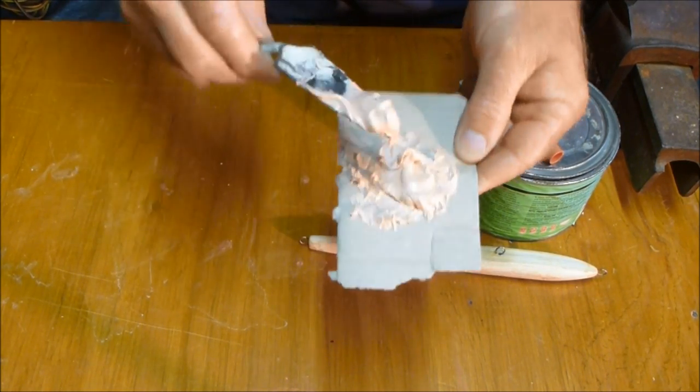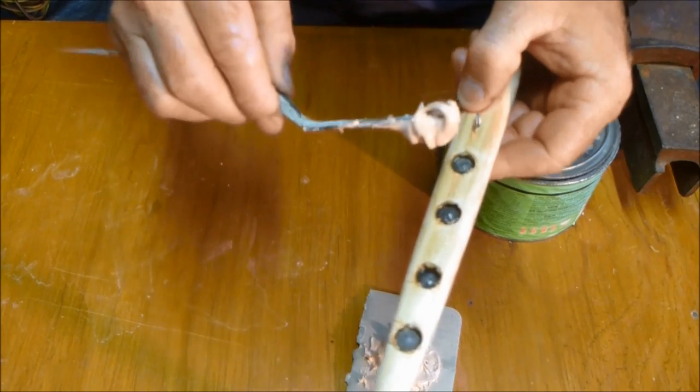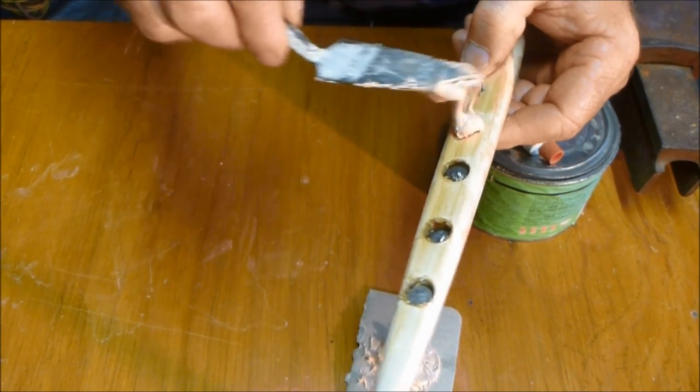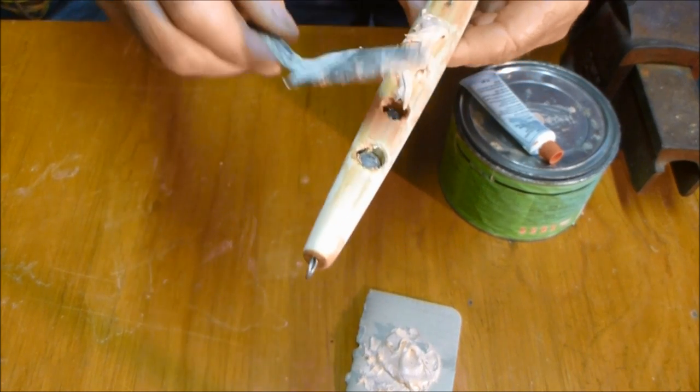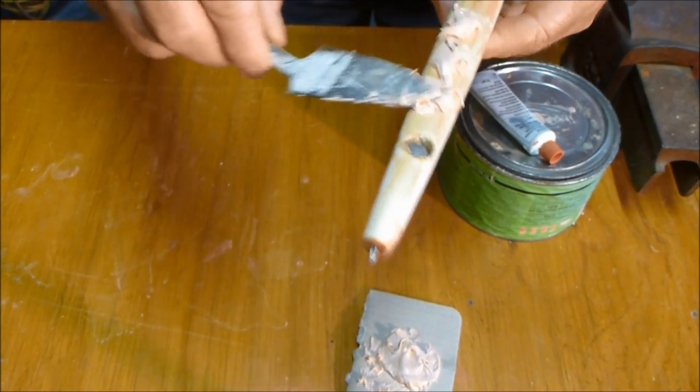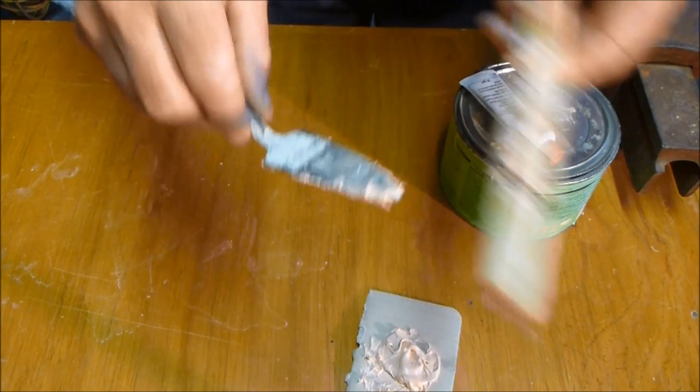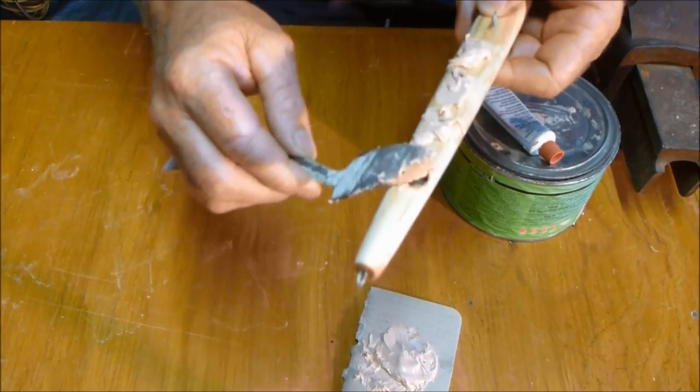So we get a little bit on the end of the trowel like so, and just put a little bit in there, one on that one. Don't worry if they're a little bit too high, that sands very easily, so overfilling's not a problem.